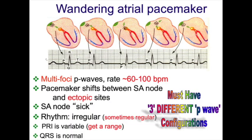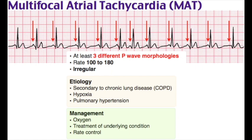Wandering atrial pacemaker: multiple ectopic atrial foci generating impulses conducted to the ventricles; heart rate under 100; three or more P-wave morphologies. Multifocal atrial tachycardia (MAT): same as wandering atrial pacemaker except heart rate over 100. EKG: rate over 100 bpm, greater than three P-wave morphologies. MAT is classically associated with severe COPD and is very difficult to treat. Calcium channel blockers (verapamil) or beta blockers may be used.